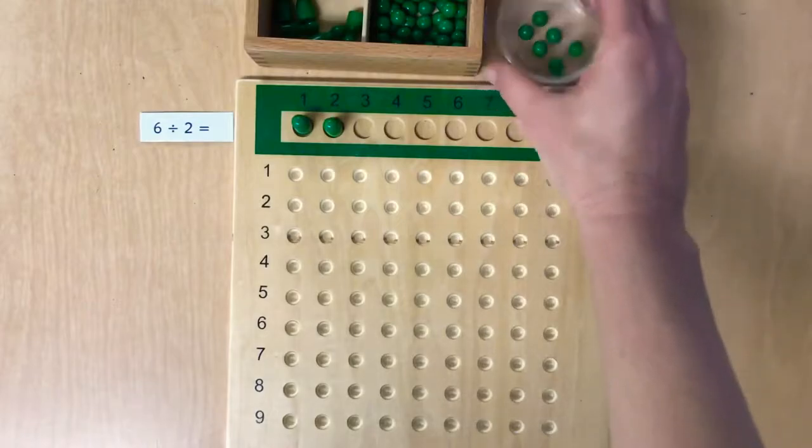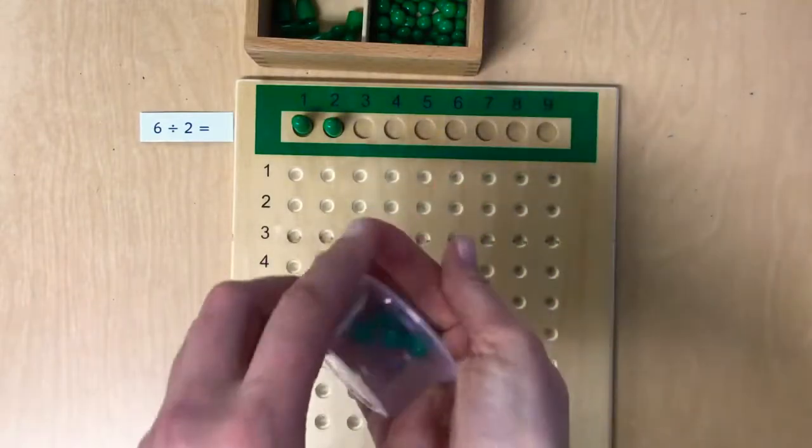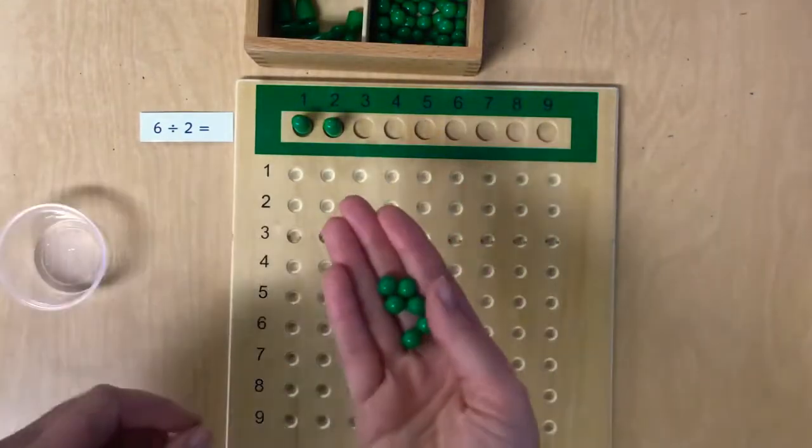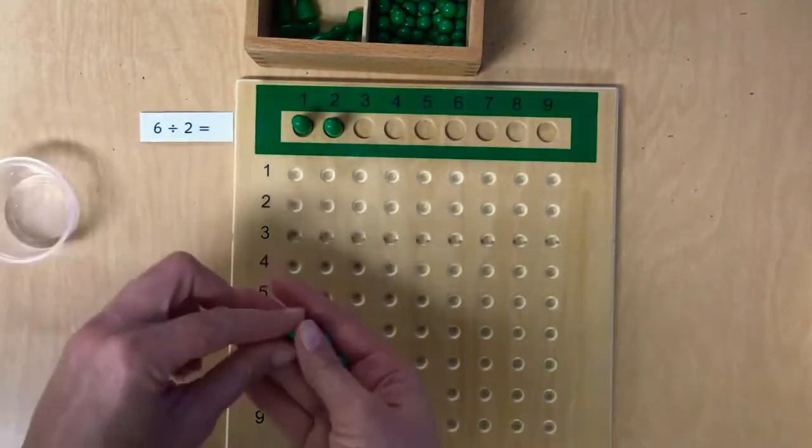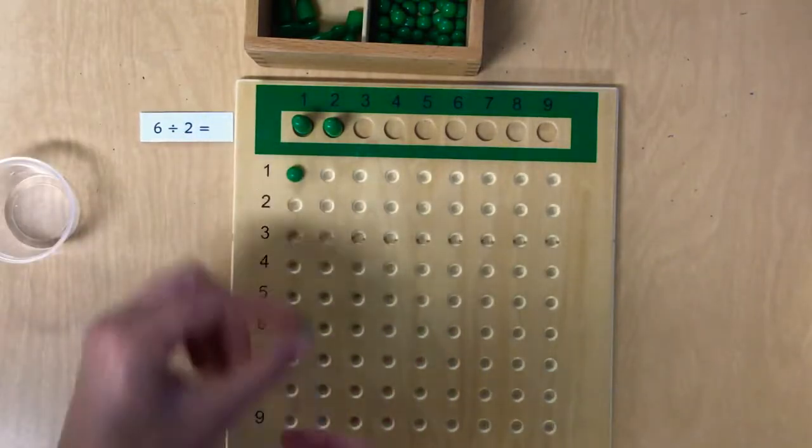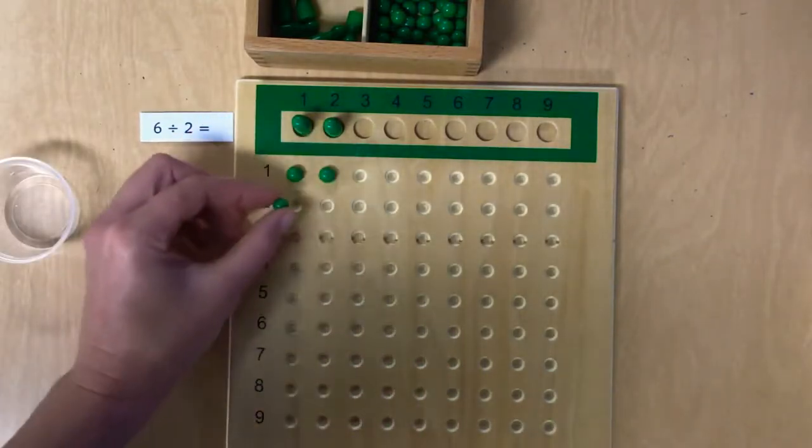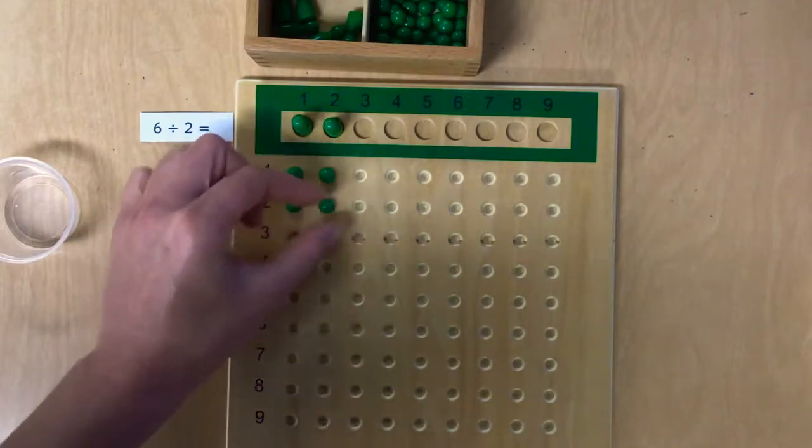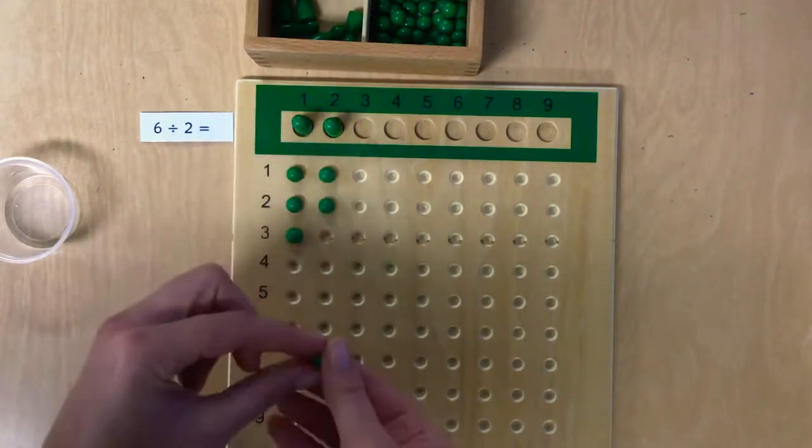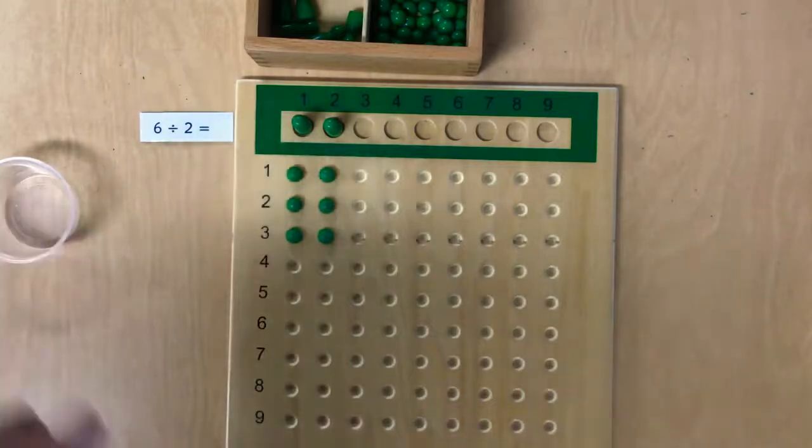So let's go ahead and make sure we give them equal amounts of green beads. So one for you, one for you, one for you, and one for you, one for you, and one for you. And I don't have any left.